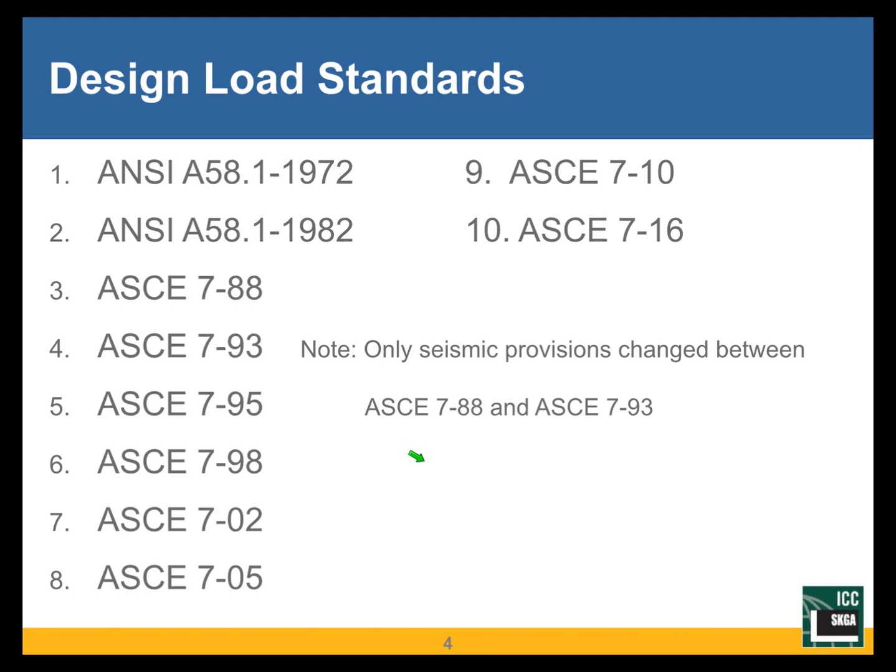This slide shows that there haven't been all that many editions of ASCE 7. The very first one was ANSI — that stands for American National Standards Institute — ANSI A58.1, 1972. Back in those days it was not an ASCE standard. And modern wind design as we practice it today started in that document. Very important document in that way, ANSI A58.1 1972.